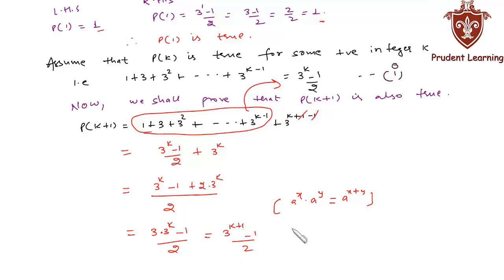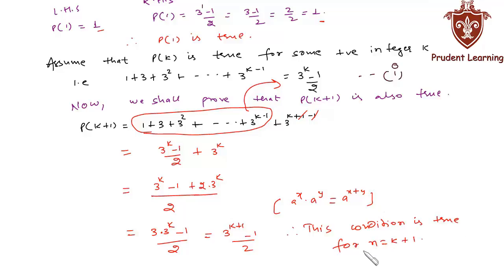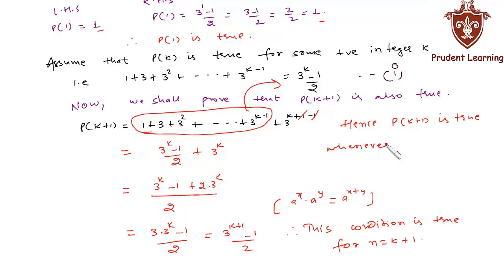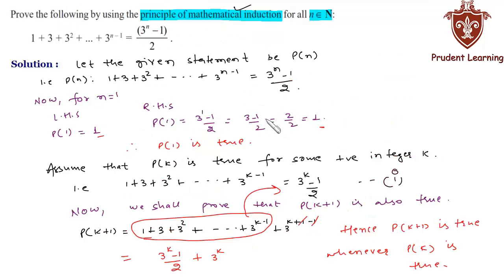Therefore P(k+1) is true whenever P(k) is true. Hence, by the principle of mathematical induction, the statement P(n) is true for all natural numbers n. This completes our solution.